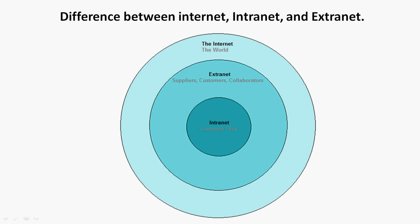This pictorial representation shows the difference between internet, intranet, and extranet. The internet is used by all the people in the world. The extranet is used by suppliers, customers, or collaborators with the help of the internet. Finally, the intranet is accessed only by the company with authentication.